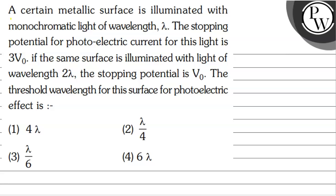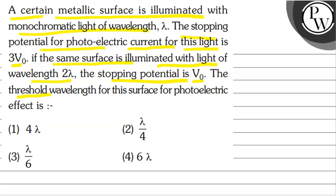Hello, let's read this question. The question says that a certain metallic surface is illuminated with monochromatic light of wavelength lambda. The stopping potential for photoelectric current for this light is 3V₀. If the same surface is illuminated with light of wavelength 2 lambda, the stopping potential is V₀. The threshold wavelength for this surface for photoelectric effect is: 4 lambda, lambda by 4, lambda by 6, or 6 lambda.